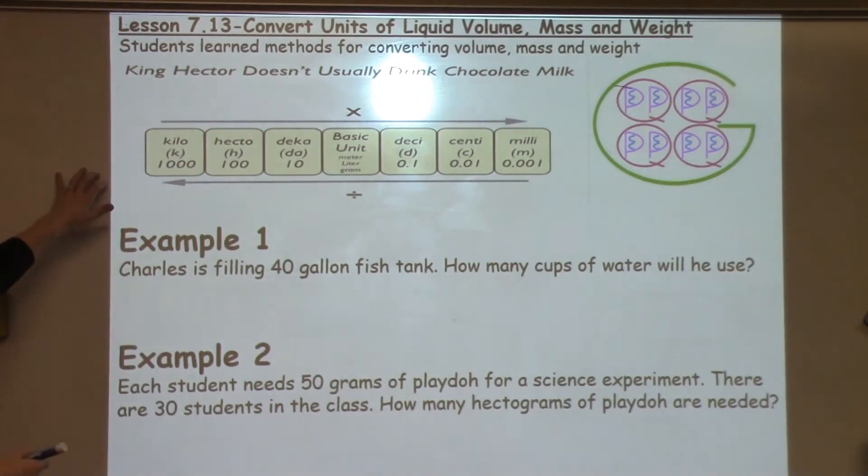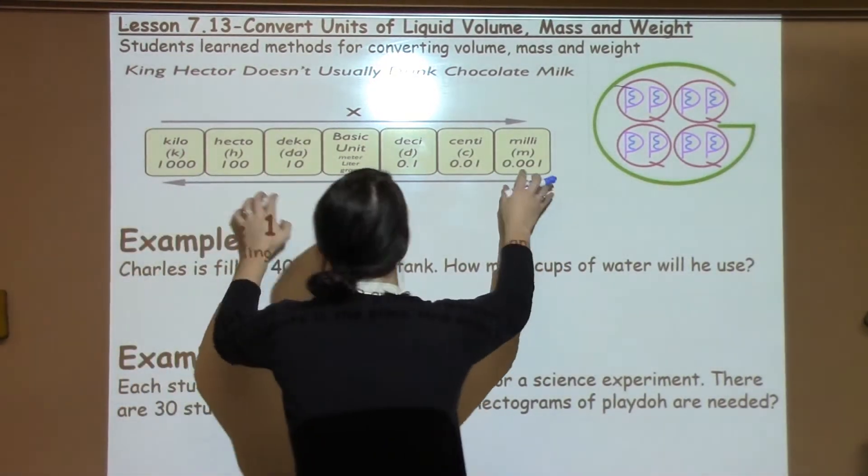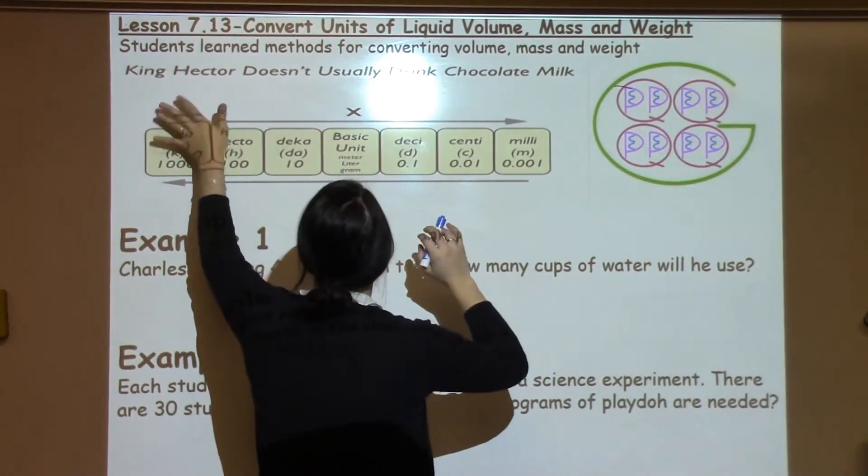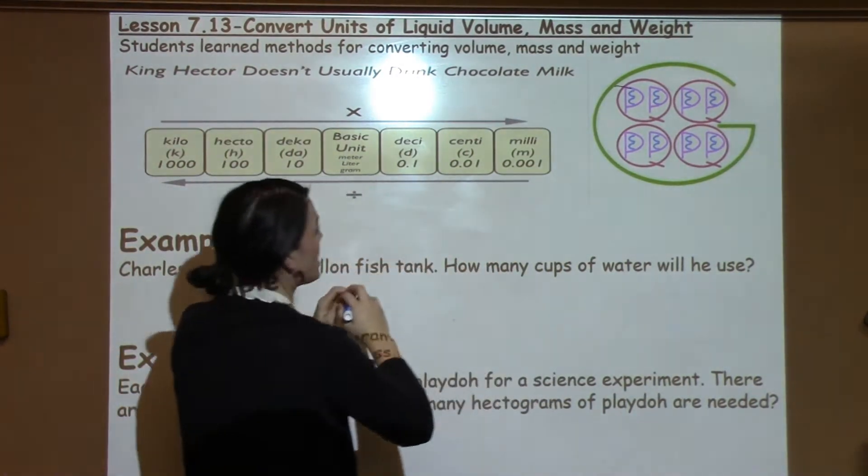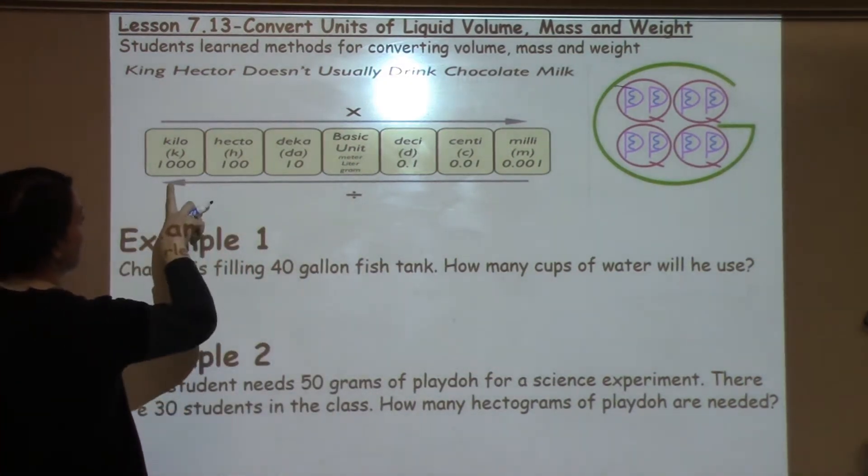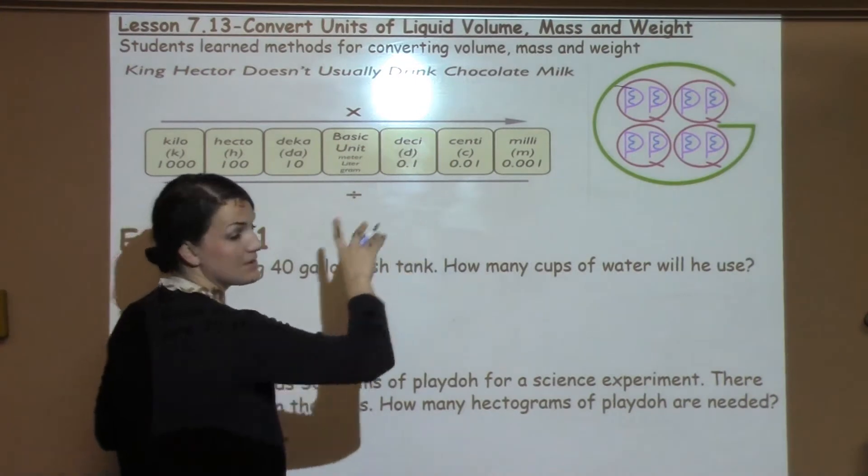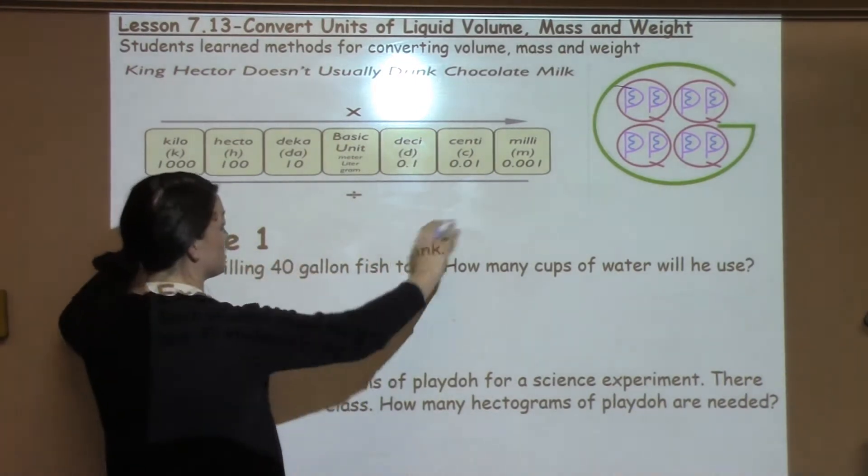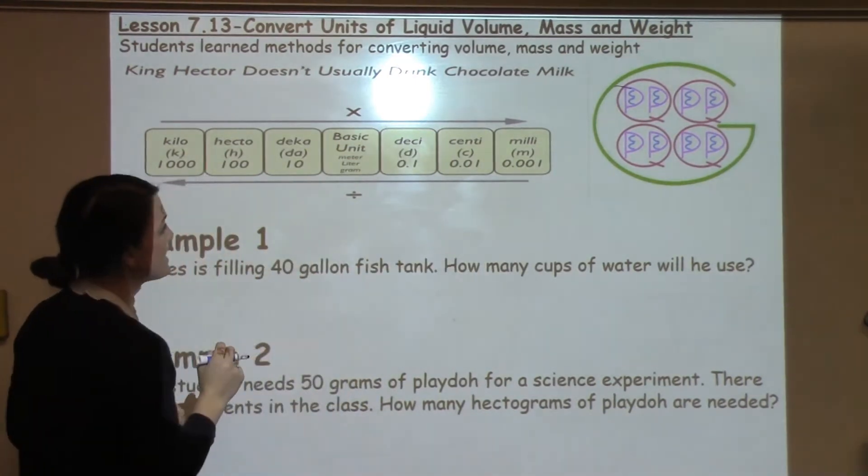I'm looking at the couple of helpers that we have here. This is the King Hector or King Henry doesn't usually drink chocolate milk acronym that students use quite a bit to remember the order that the metric system goes in from largest to smallest unit.